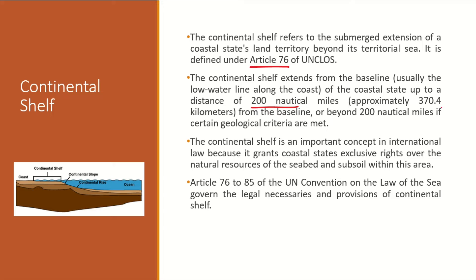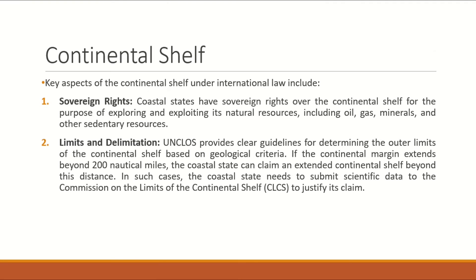All of these resources are enjoyed by coastal states and this is their exclusive right. Regarding key aspects of the continental shelf: 1. Coastal states have sovereign rights on their continental shelf and are fully authorized for their continental shelf. 2. Under UNCLOS, the continental shelf limit is clearly defined at 200 nautical miles. But if a continental shelf extends more than 200 nautical miles, then coastal states can extend its continental shelf limit. In such cases, coastal states have to submit scientific data to the Commission on the Limits of the Continental Shelf.